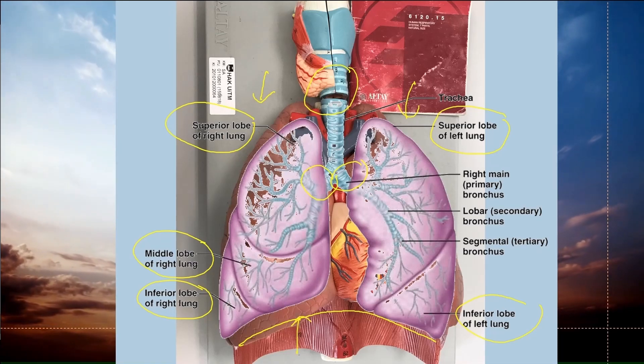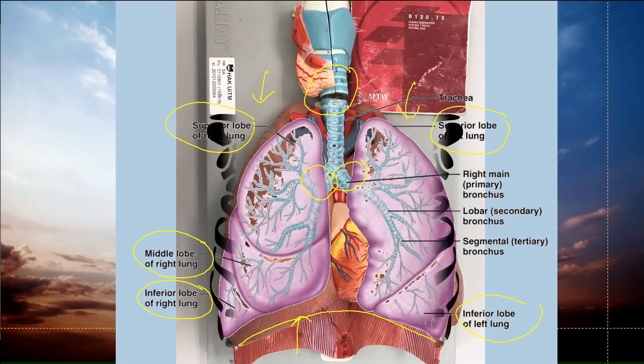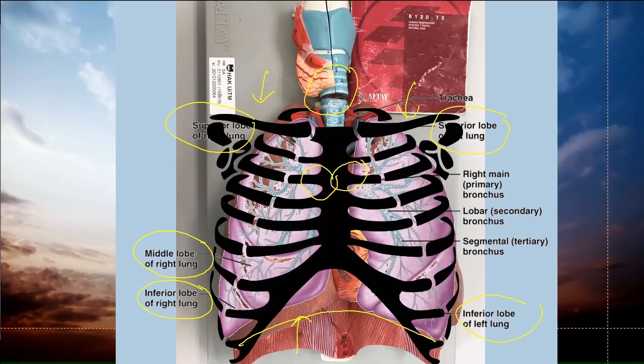Down below, we have a muscle that is used to control the breathing mechanism. This muscle is called the diaphragm. All of these organs are protected by the rib cage.